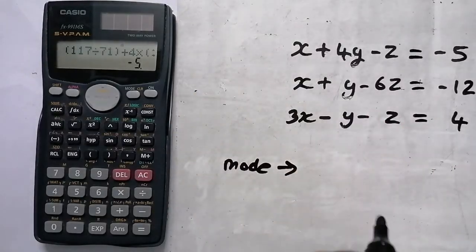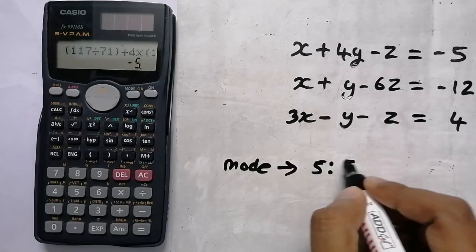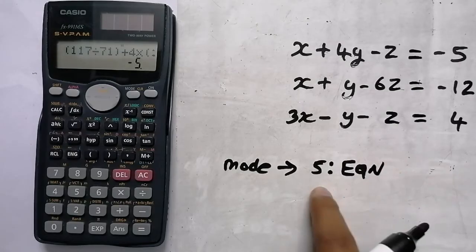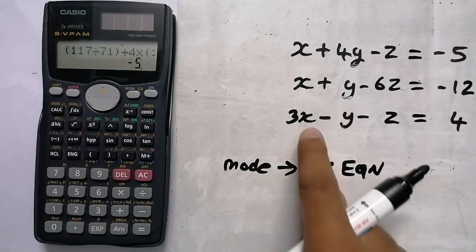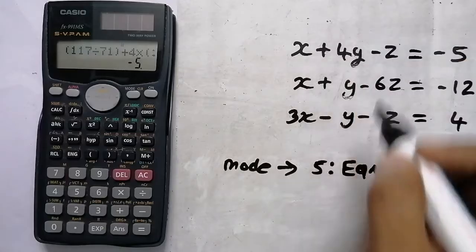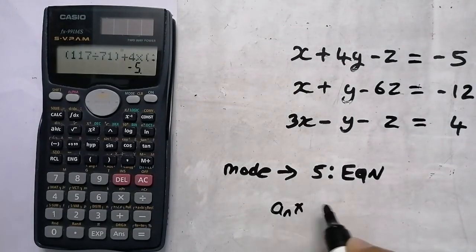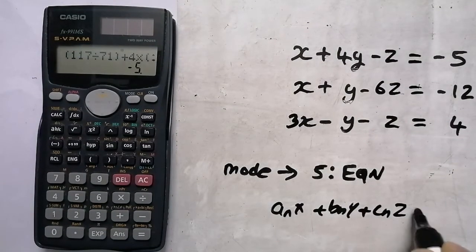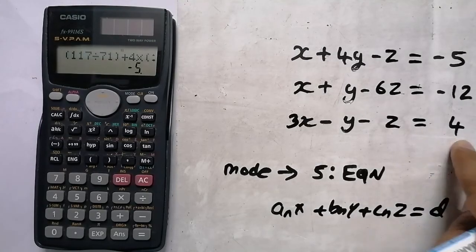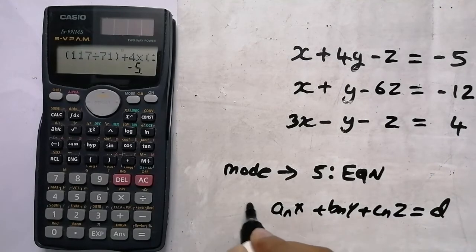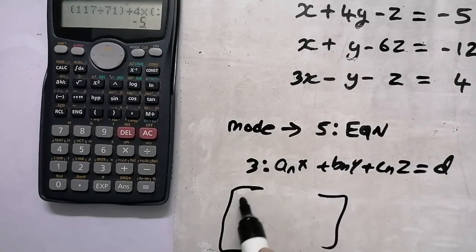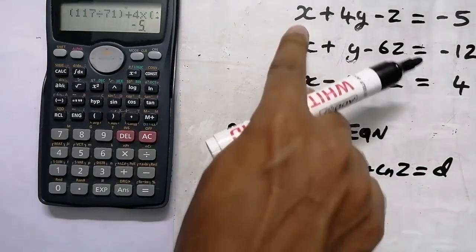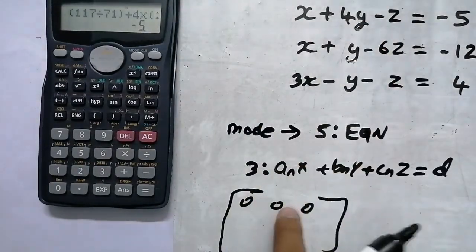We have a few functions. The equation has 3 variables: anx plus bny plus cnz equal to d. We use a matrix to solve these 3 variables, giving us values where x equals 1 and y equals 4.